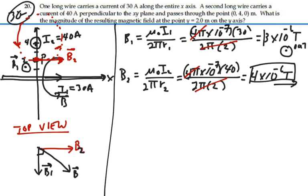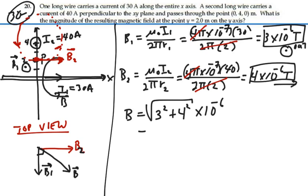So we have these 2 magnetic fields. They're perpendicular to each other. Our net magnetic field by the Pythagorean theorem is going to be 3 squared plus 4 squared square root times 10 to the minus 6. So that will give us 5 times 10 to the minus 6 Tesla at this angle coming out of the